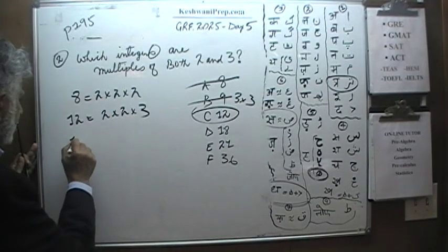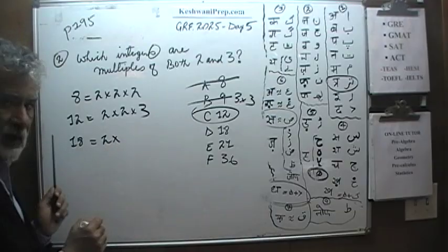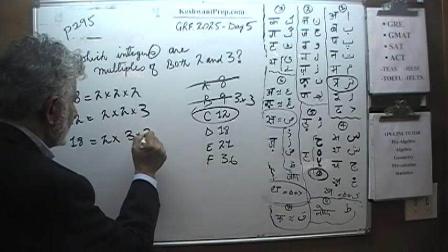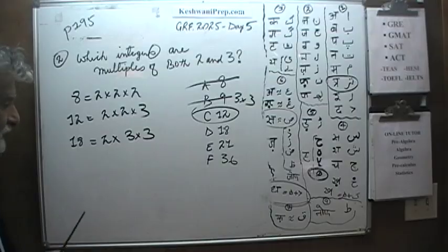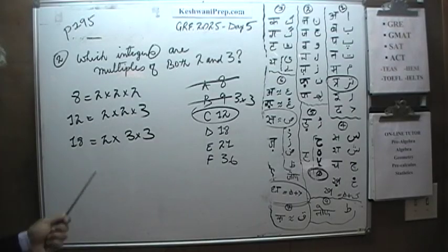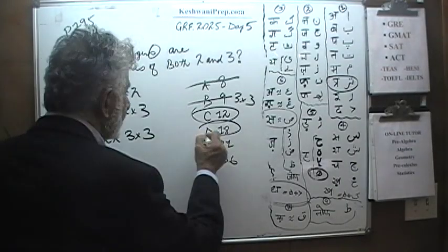What about 18? 18 is 2 times 9 which is 3 times 3. 3 times 3 is 9, 9 times 2 is 18. There you go. That works also.